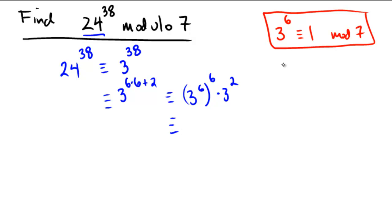Now remember 3 to the 6th by Fermat's little theorem is congruent to 1. So this is the same as 1 to the 6th times 3 squared. And of course, 1 to the 6th is 1 and 3 squared is just 9.